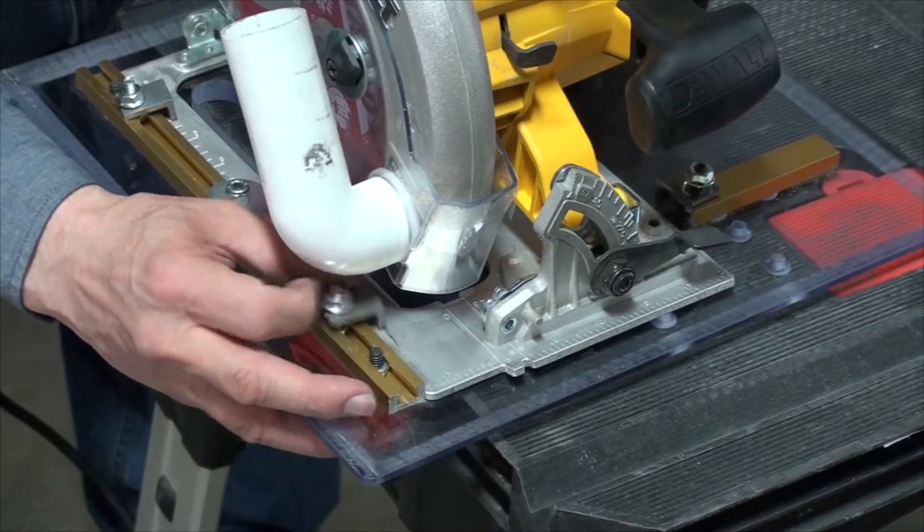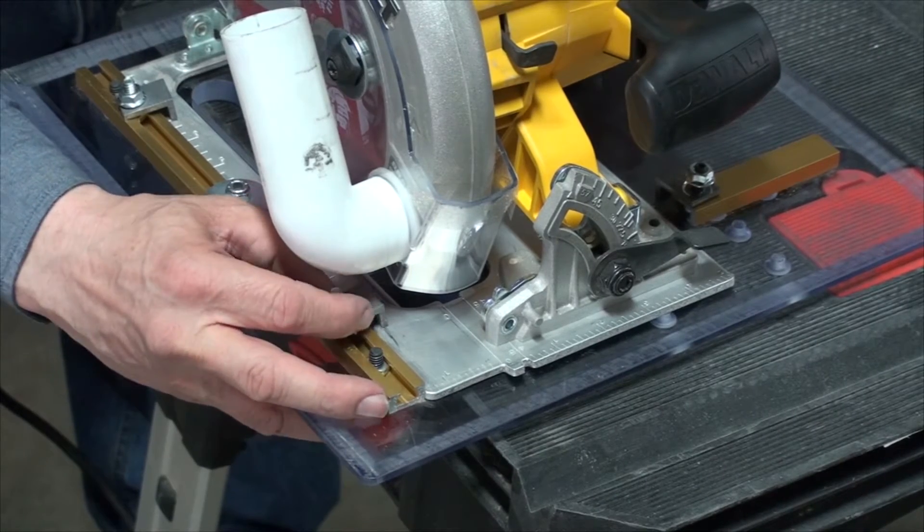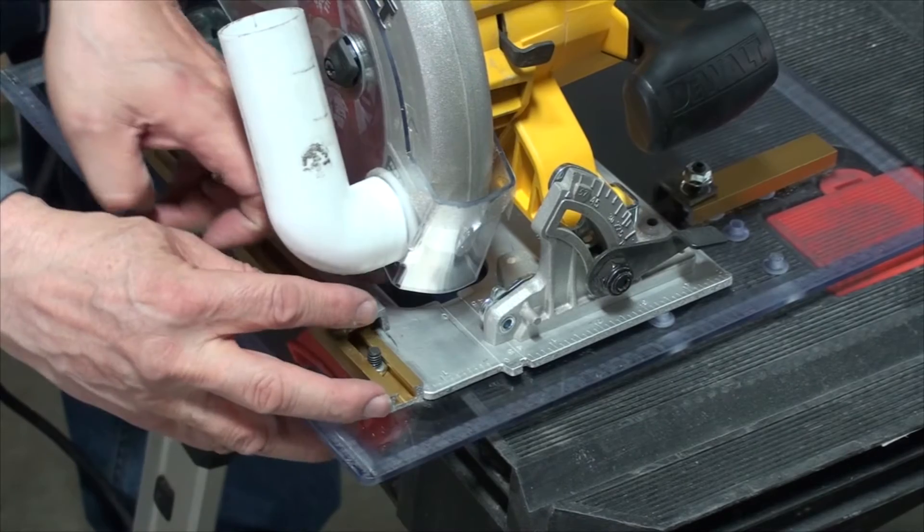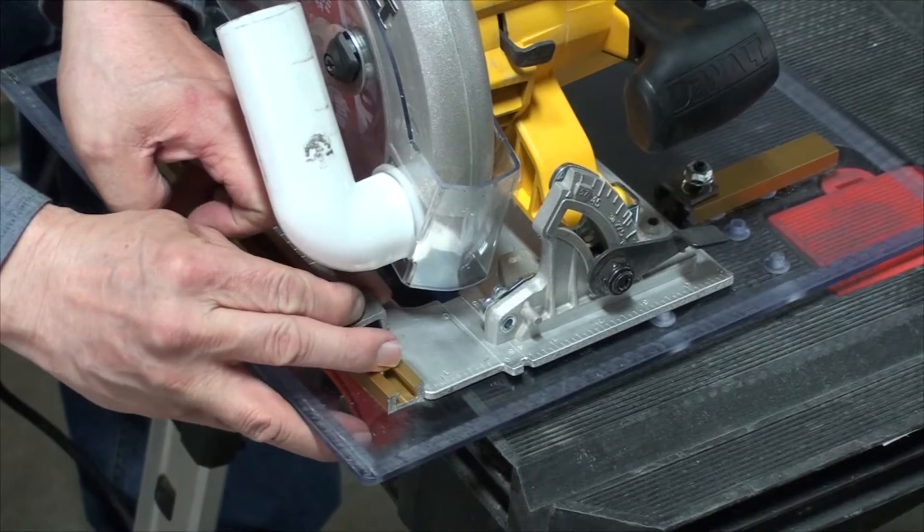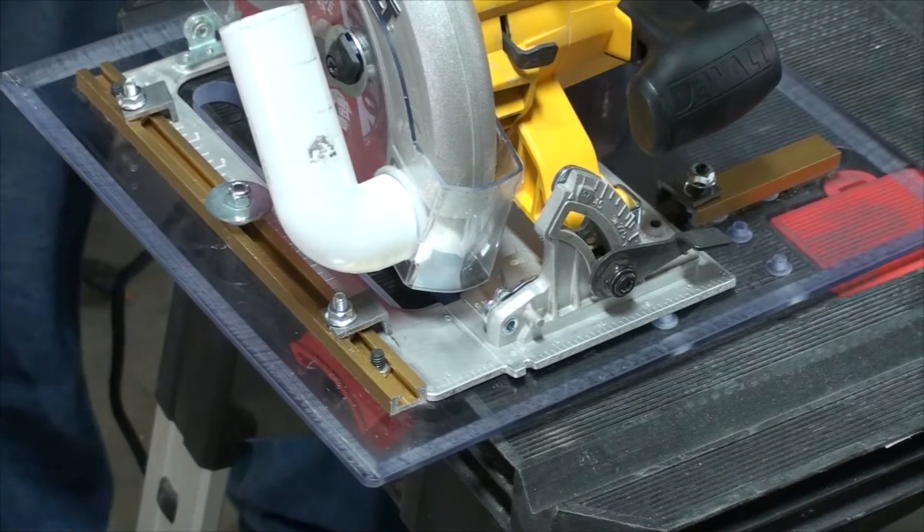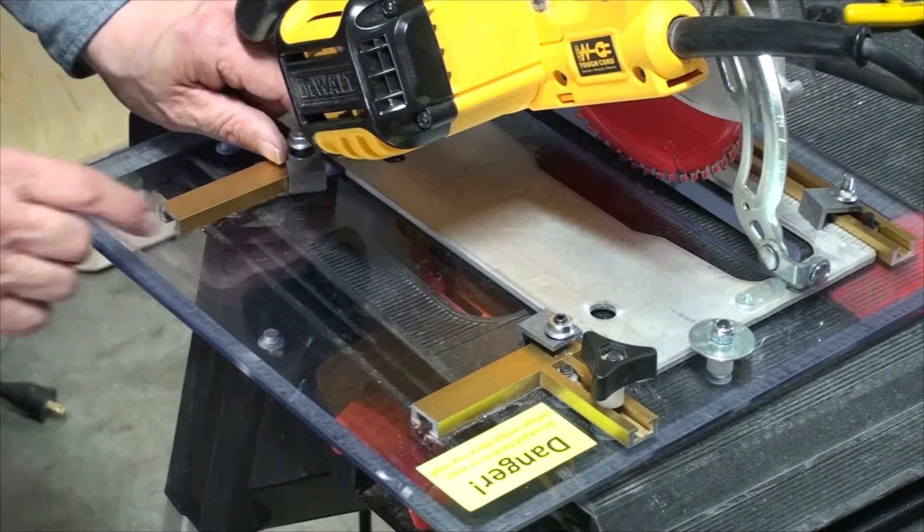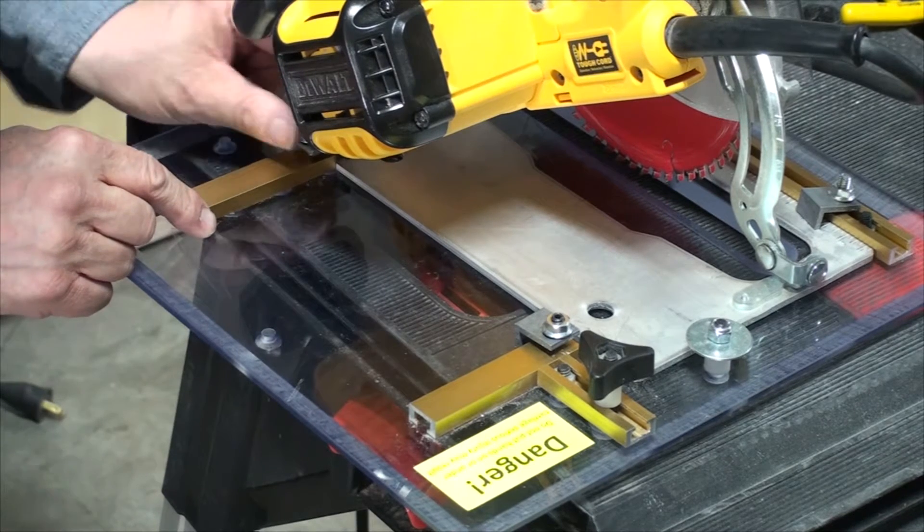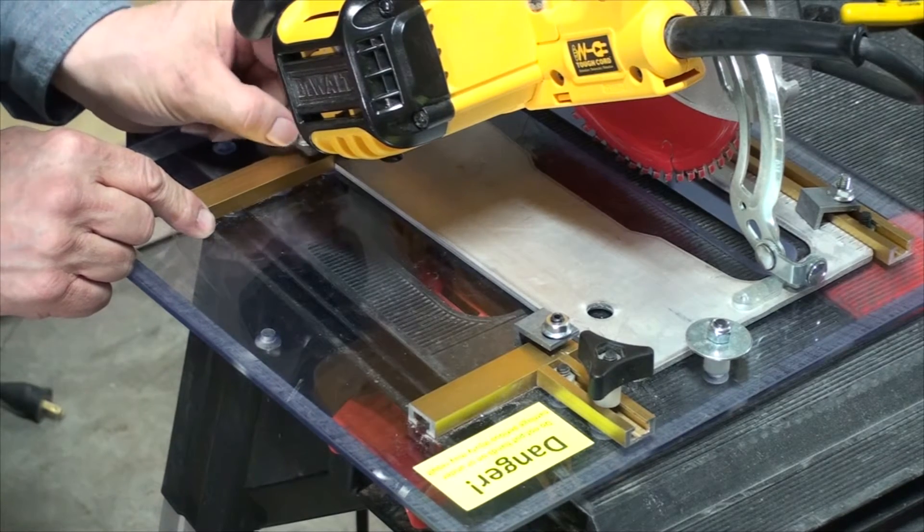Just bring these down to finger tight. On this other side, we do the same. Take this, make sure that's up, slide it in, and then we bring that down until it's finger tight.